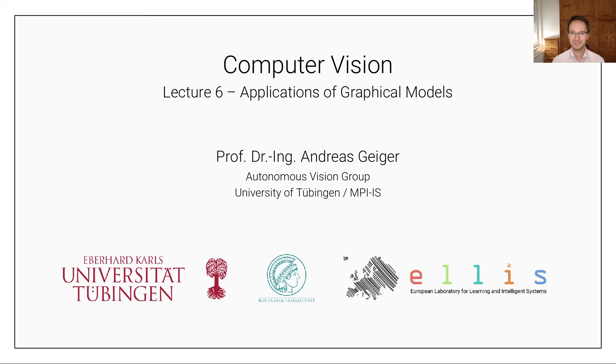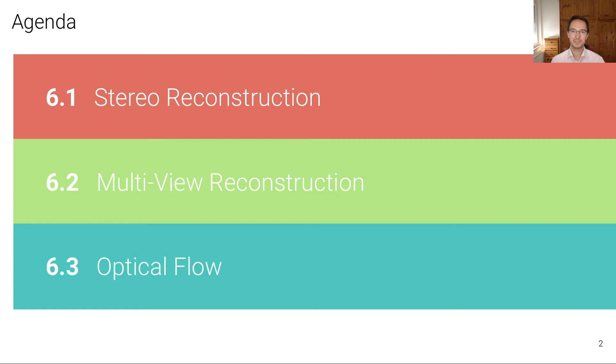Now, in this lecture, we're going to discuss some applications of graphical models to computer vision problems. In the first unit, we're going to discuss the dense stereo reconstruction problem using Markov random fields, in particular, performing maximum a posteriori inference in Markov random fields with discrete variables using the max-product algorithm that we learned about in the last lecture.